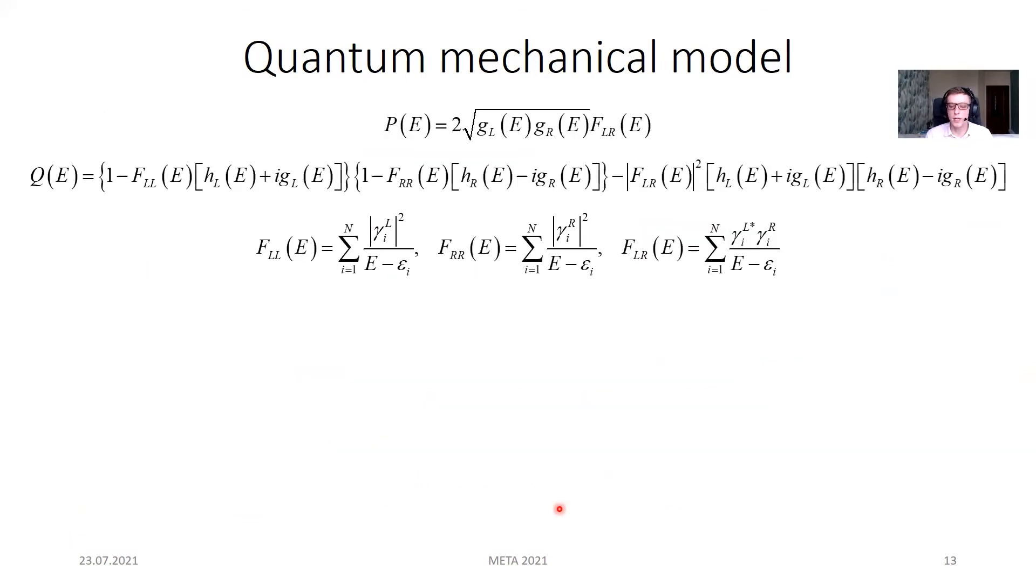In general, functions P and Q can be derived in terms of the energies of the isolated resonator and couplings to the waveguides.